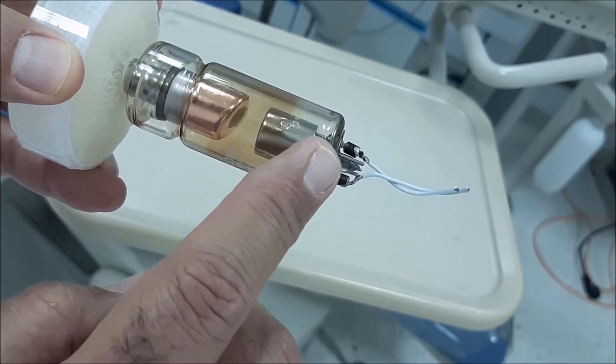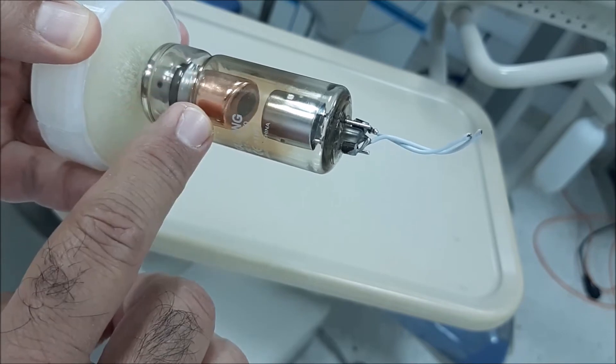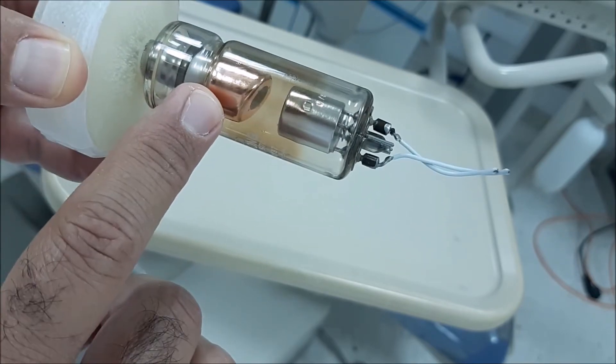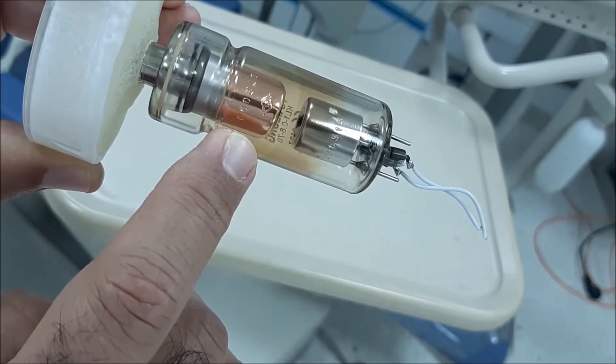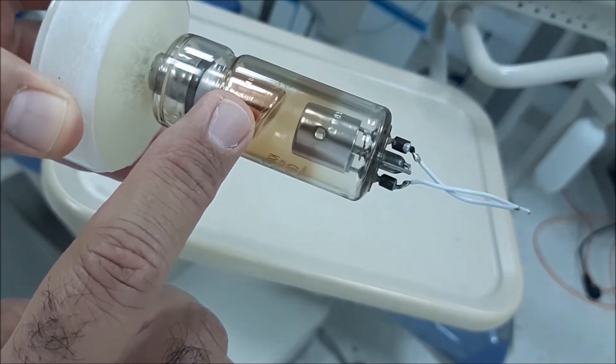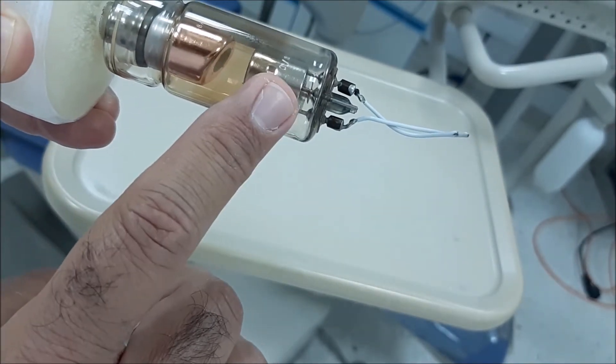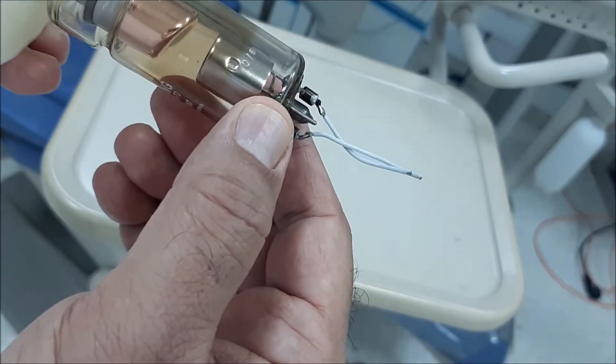So it is basically composed of the cathode and the anode. You can see from the difference in color - this is the typical appearance of copper. It is the anode, and this is the cathode. Now, let's start with the cathode.